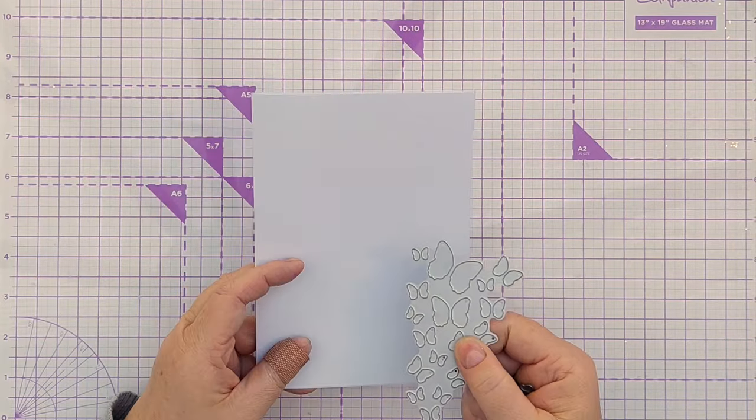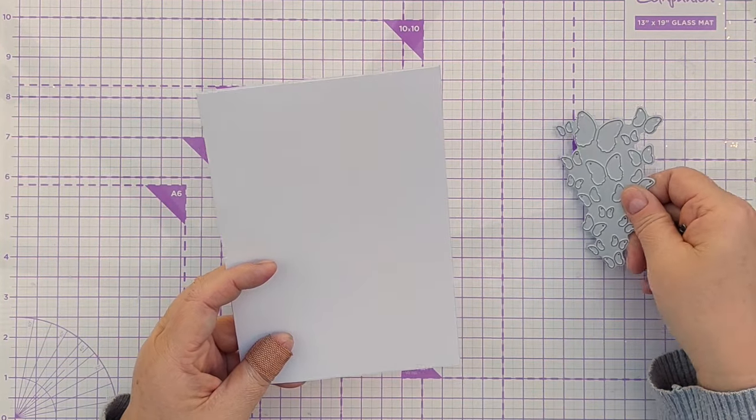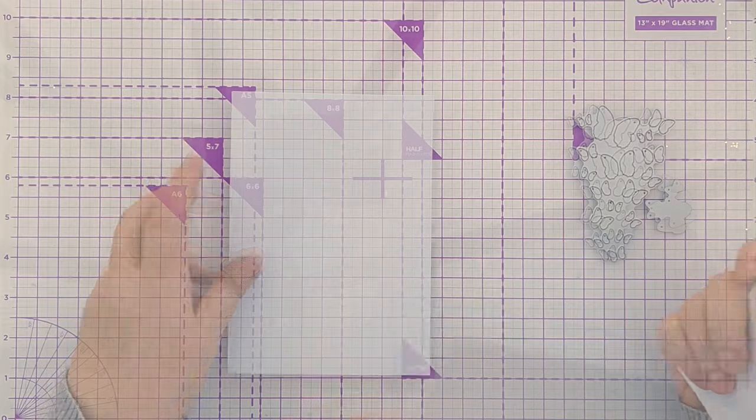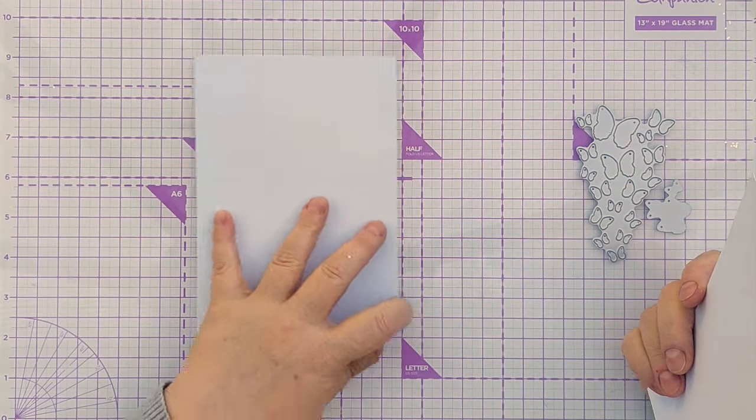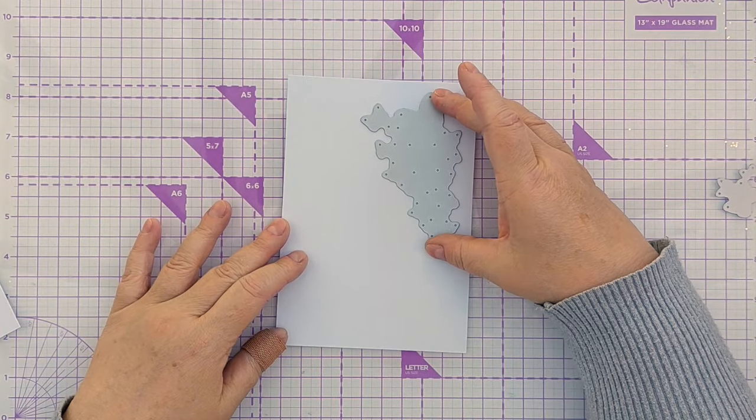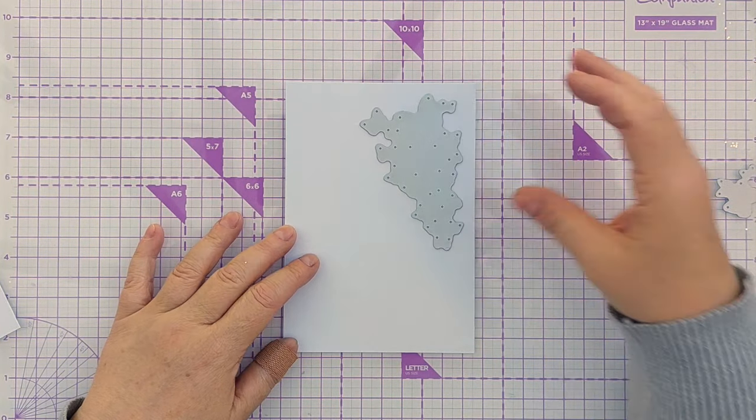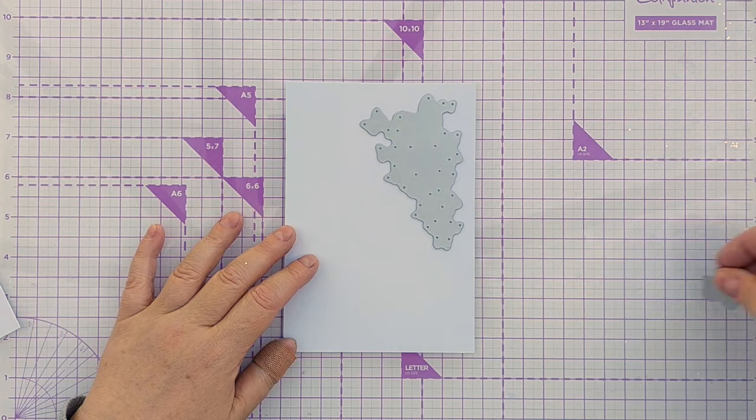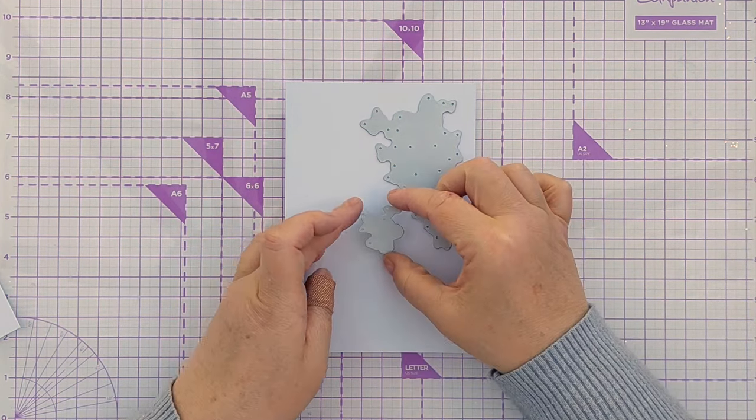So the first thing I'm going to do is die cut the apertures in the front panel of the card. My card blank is 5 by 7 inches. I've got a panel that's a little bit smaller all the way around. So I'm thinking of having my butterflies in the top right corner. I've got a few more here like this.